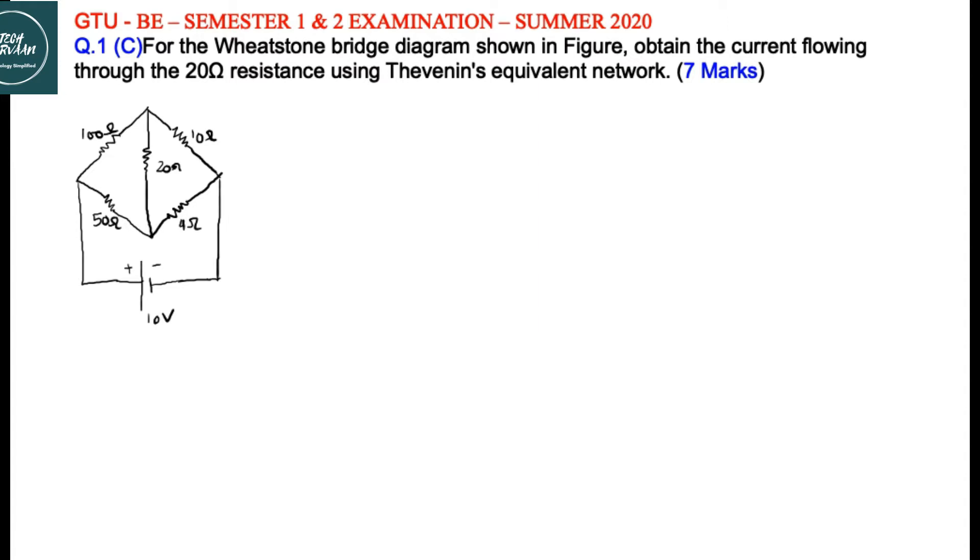Our question is we want to find current in this branch. Let us name it current I20 utilizing Thevenin's theorem. According to Thevenin's theorem, we require to find Thevenin's Equivalent Voltage, VTH, which is the open circuit voltage across that branch, and RTH, which is Thevenin's Equivalent Resistance. When that branch is open circuited, we need to find equivalent resistance of the network.